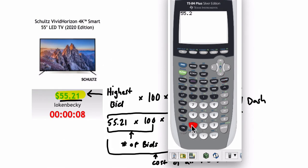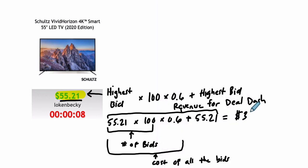$55.21 times 100 times 0.6, and then add back whatever you won it for. That's the actual cost of it, right? When you're bidding, you're just raising the price to see if you win. If you win, you have to buy it. And then boom, $3,367.81. That's pretty good for DealDash, right?